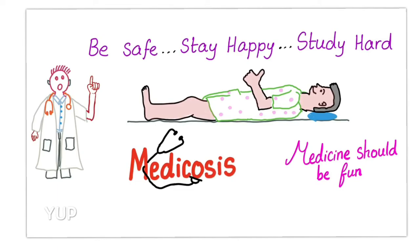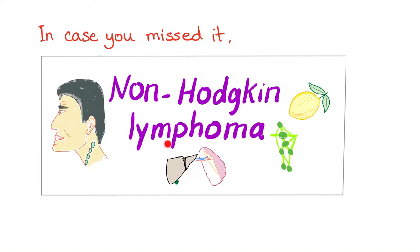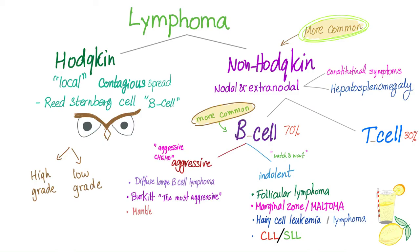In the previous video, we talked about non-Hodgkin's lymphoma, so make sure to watch that previous video before this one. Hodgkin's or non-Hodgkin's — which one is more common? Of course, non-Hodgkin's. Which one is only nodal? Hodgkin's. Non-Hodgkin's has nodal and extra-nodal. It has constitutional symptoms. Could be B-cell or T-cell — which one is more common? B-cell. And B-cell is either aggressive or indolent.